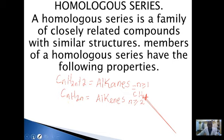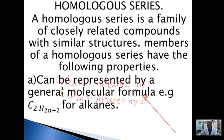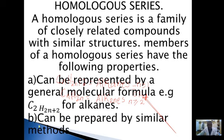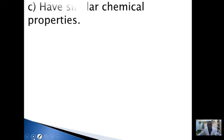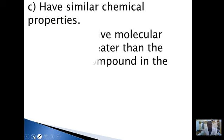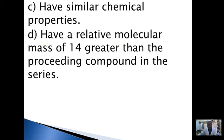When n is greater than or equal to 1, we have the first member for the alkanes, which is CH₄. For alkenes, n must be greater than or equal to 2. The first property is that a homologous series can be represented by a general molecular formula — for example, CnH₂n₊₂ for alkanes and CnH₂n for alkenes. The second property is that members can be prepared by a similar method. The third is that they have similar chemical properties.